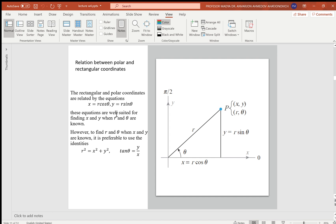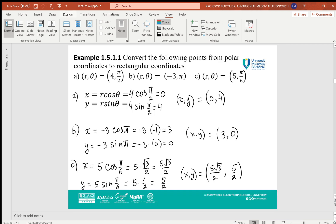The rectangular and polar coordinates are related by the equations x = r cosθ and y = r sinθ. These equations are well suited for finding x and y when r and θ are known. However, to find r and θ when x and y are known, it is preferable to use the identities r² = x² + y² and tan θ = y/x. These relations can be obtained using the right-angle triangle shown in the picture.